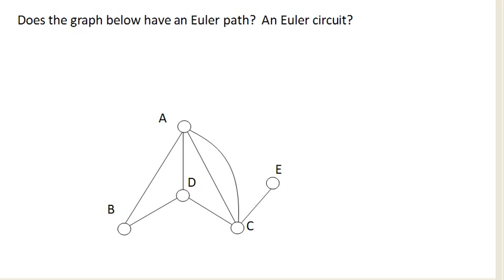So suppose we got a graph here and we're wondering, does this graph have an Euler path? How about an Euler circuit? It turns out that there's a really easy way to tell, and it comes down to the degree of the vertices.